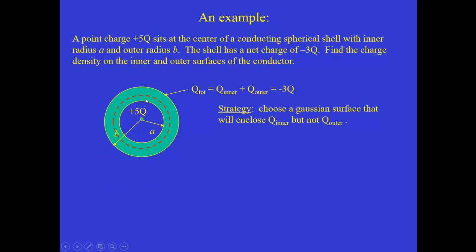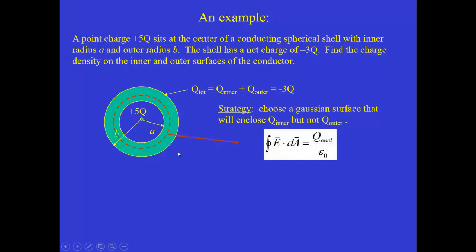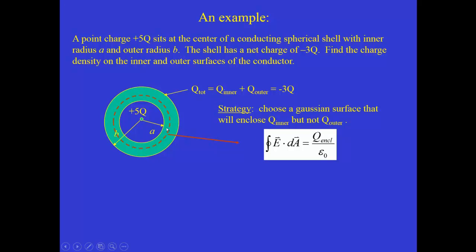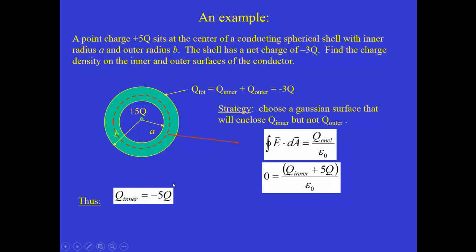We pick a Gaussian sphere with radius between a and b, so its surface sits in the solid region of the conductor. Applying Gauss's law, the left-hand side is trivial because E equals zero inside a conductor, so E dot dA becomes zero. The charge enclosed includes the plus 5q point charge plus q_inner. Those two must sum to zero, so q_inner equals minus 5q. The inner surface charge density sigma_inner is minus 5q over the inner surface area, 4π a squared.